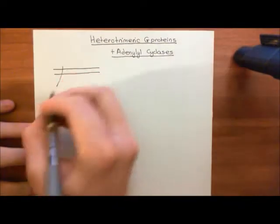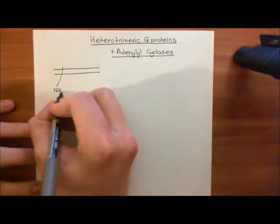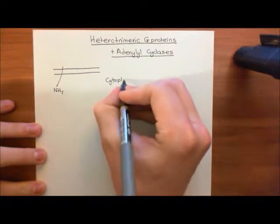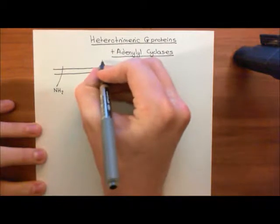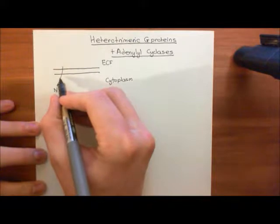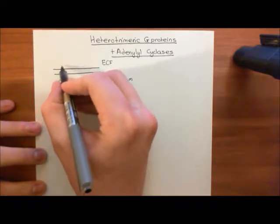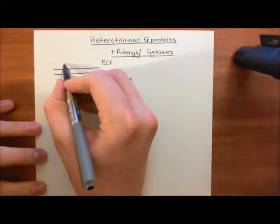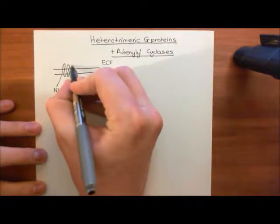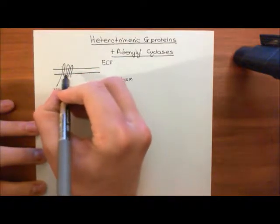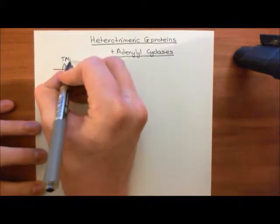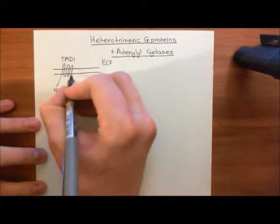The amino terminus of the adenylyl cyclase enzyme is on the cytoplasmic side of the membrane, with the other side being the extracellular fluid. Then you have membrane-spanning alpha-helices — first, second, third, fourth, fifth, sixth — which bundle together. This whole bundle of six membrane-spanning alpha-helices is called transmembrane domain 1, or TMD1.